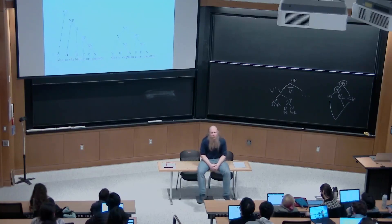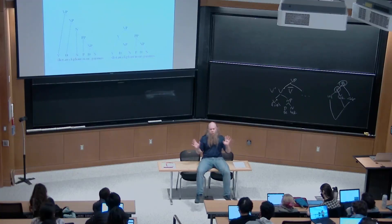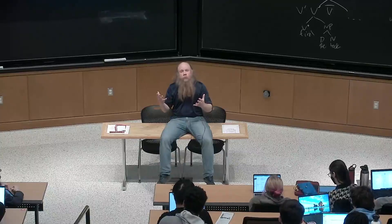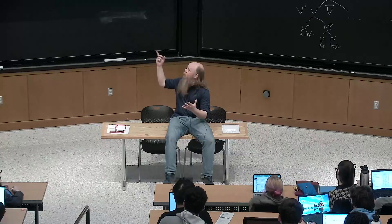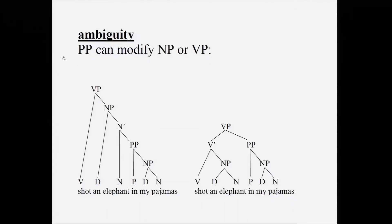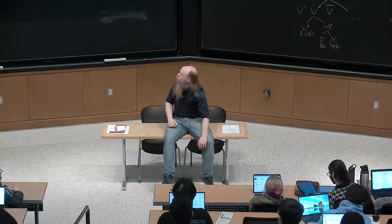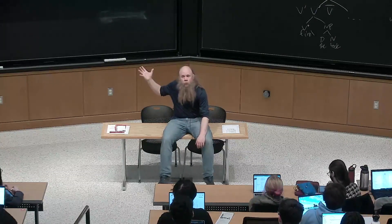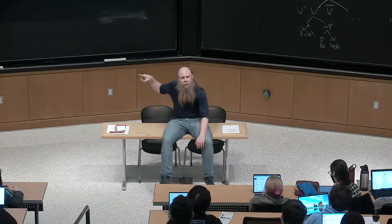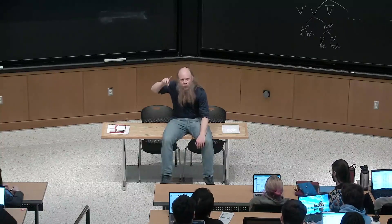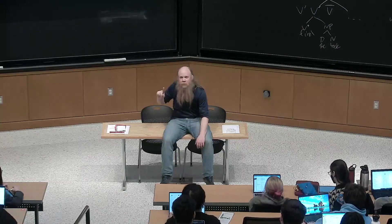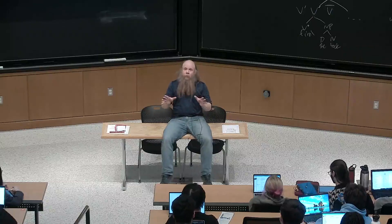We're going to develop some constituency tests. So far I've only asserted that this string of words ought to have two different structures — that the PP ought to be able to modify either a noun phrase or a verb phrase — and we have the intuition that the sentence is ambiguous. I haven't yet given you reason to believe these structures really are associated with those meanings. I'll try to do that now using constituency tests.